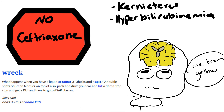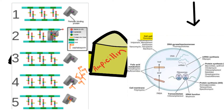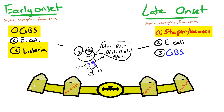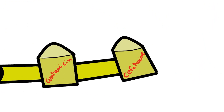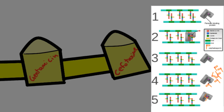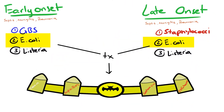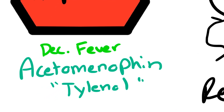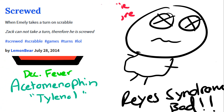Ampicillin works by inhibiting penicillin-binding proteins inside the bacterial cell wall, destabilizing it so it breaks down. It covers gram-positives like GBS, Listeria, and Staph. Gentamicin is an aminoglycoside that works by inhibiting the 30S ribosomal subunit and interrupting protein synthesis; it's broad spectrum and covers all three organisms. Cefotaxime is a third-generation cephalosporin that works similarly to ampicillin by binding penicillin-binding proteins and inhibiting the last step of cell wall synthesis; it covers E. coli. Keep fever down with acetaminophen to prevent febrile seizures — avoid aspirin as it causes Reye's syndrome. Give IV fluids if needed.